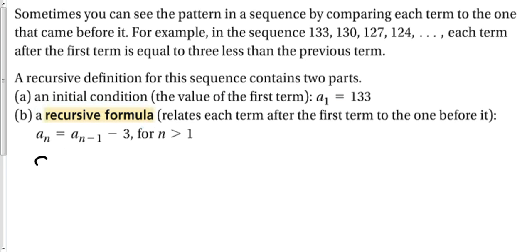So a recursive formula has something that looks like this. a sub n minus 1. That means the term before n and then what do I do to it? I take the term before n and I subtract 3. That will give me the nth term. So the way I do this then is I start with the first term, 133. To get the second term we take the first term minus 3. So to get the second term I take 133 minus 3 which is 130. To get the next term I take that term, the second term, and subtract 3. Every term comes from the term before it.